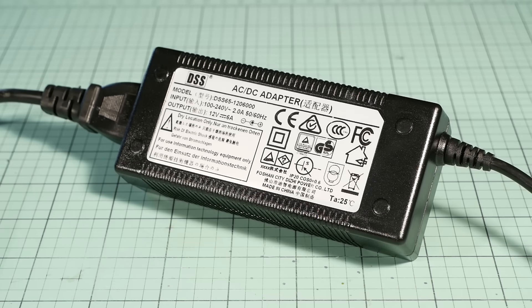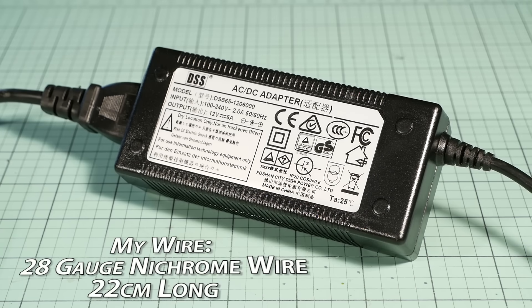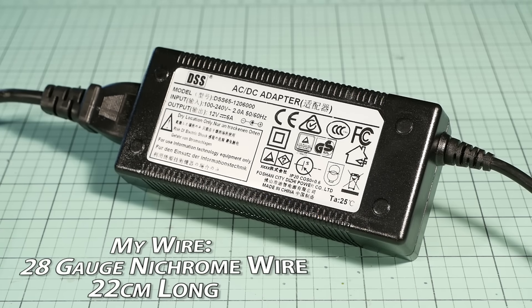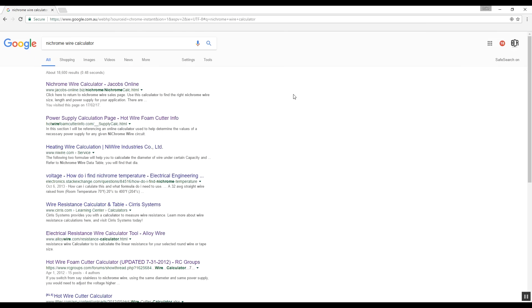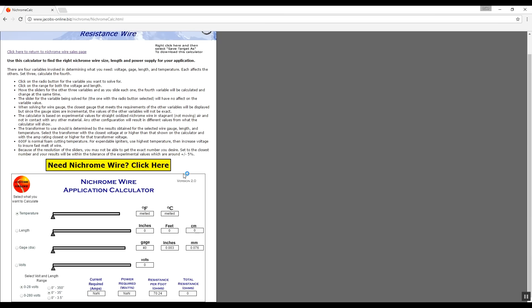As for power source, just ensure your power supply can handle the required load needed to heat the wire. For the size and length of wire I'm using I found 12 volts and 6 amps is enough. A simple way of working this out is to use the nichrome wire calculator that is available at Jacobs Online. I'll add a link below so you too can use the calculator.